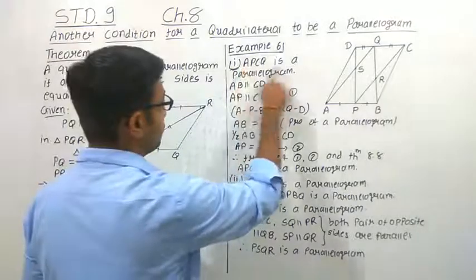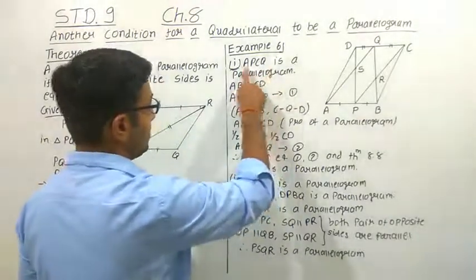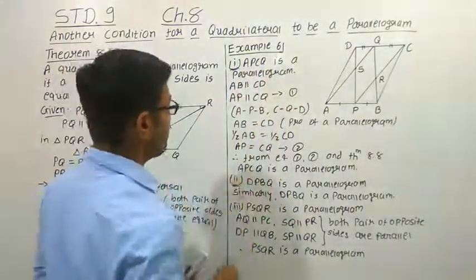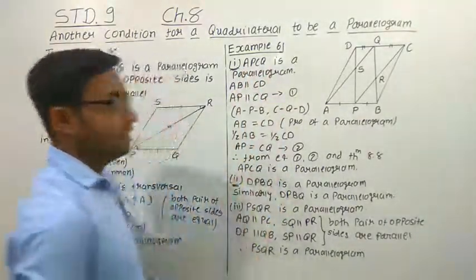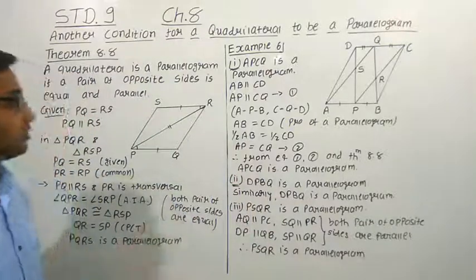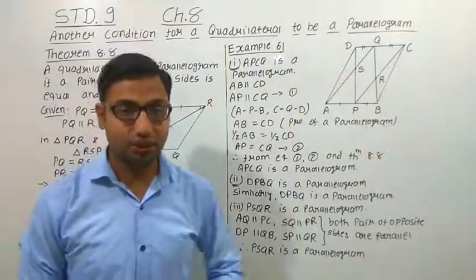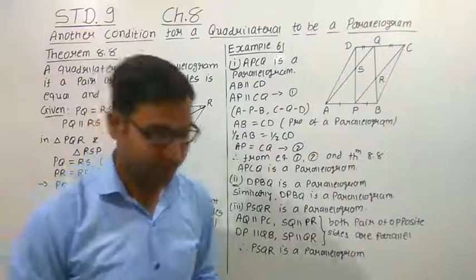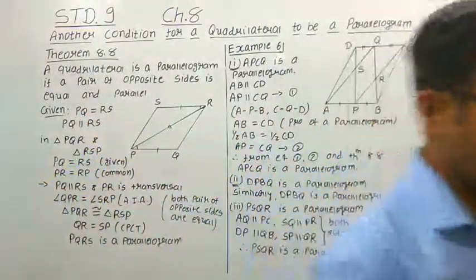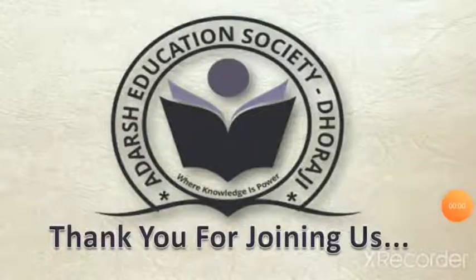So we have proved all three statements: APCQ is a parallelogram and DPBQ is a parallelogram, and PSQR is a parallelogram. This is all about this lecture. Thank you. Thank you for joining us.